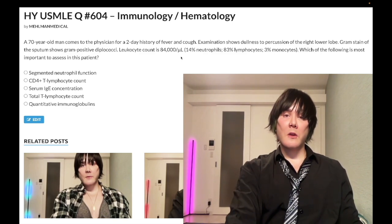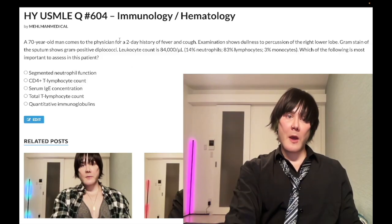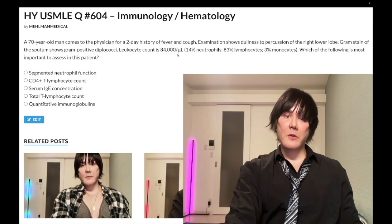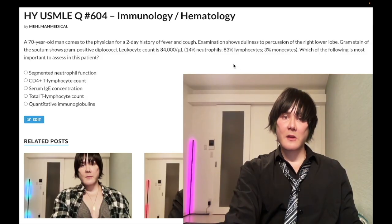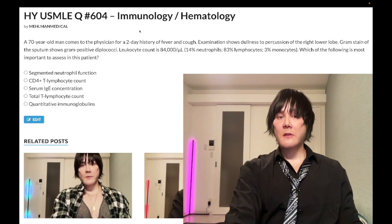Students will be able to identify this as strep pneumo and a pneumonia, but the leukocyte count is super elevated and it's all lymphocytes — so this is CLL, chronic lymphocytic leukemia. If we had the same question in a 4-year-old or 8-year-old, it would be ALL, not CLL. So this is CLL, and the question wants to know what's most important to assess.